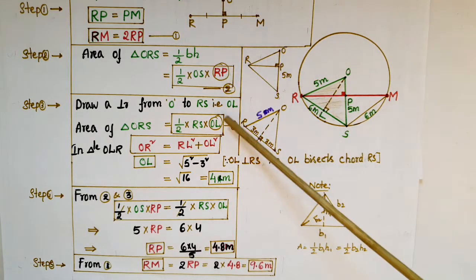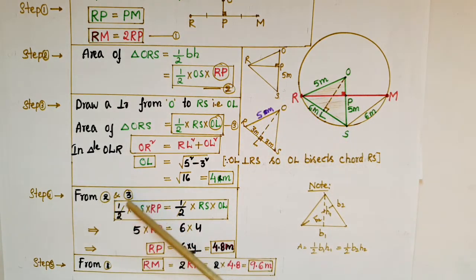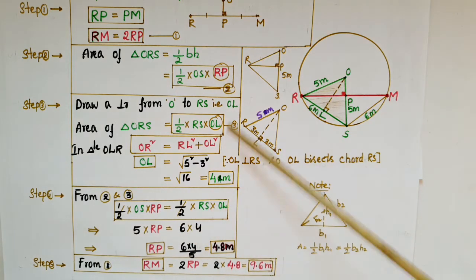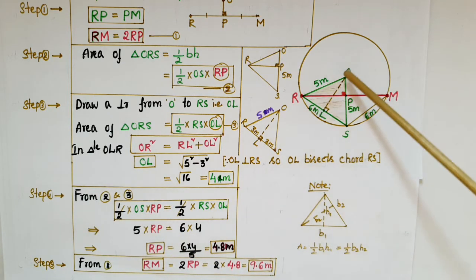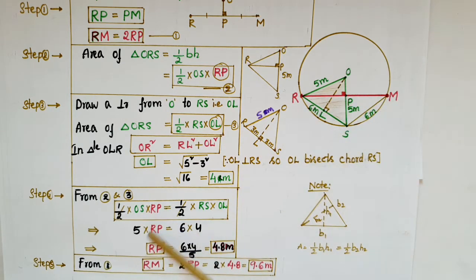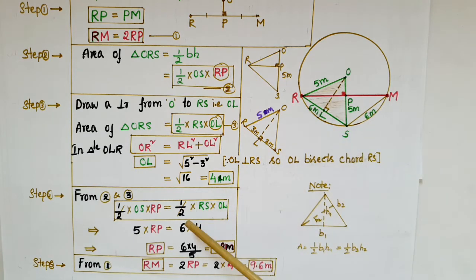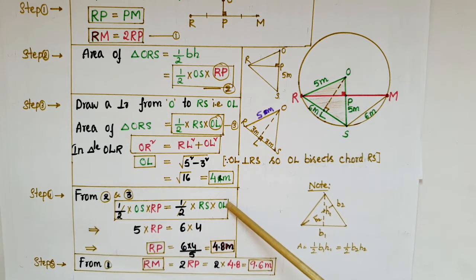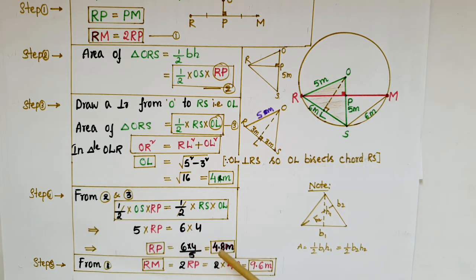From equations 2 and 3, these are areas of the same triangle, so they are equal: one-half times OS times RP equals one-half times RS times OL. Cancelling one-half, we get 5 times RP equals 6 times 4. Therefore RP equals 24 divided by 5, which is 4.8 meters.